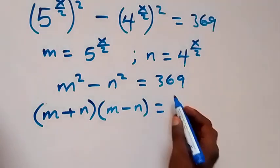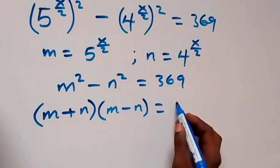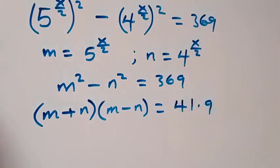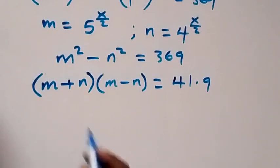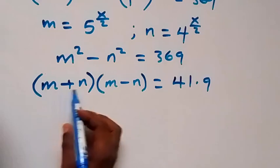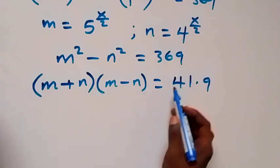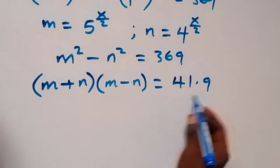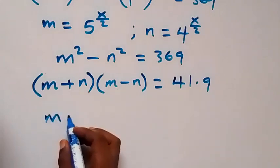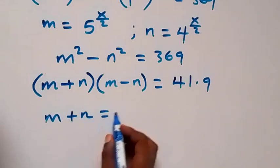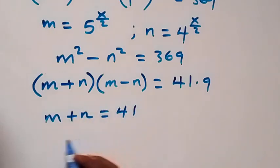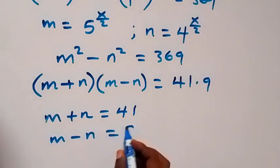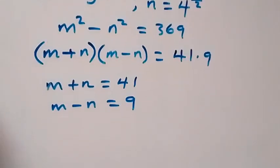So we have (m + n)(m − n) = 369. We can separate 369 as 41 times 9, so we say that m plus n equals 41 and m minus n equals 9. This gives us our two equations: m plus n equals 41, and m minus n equals 9.